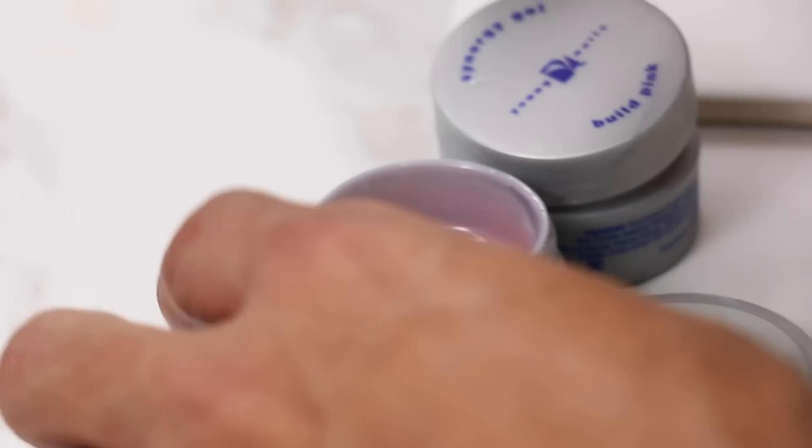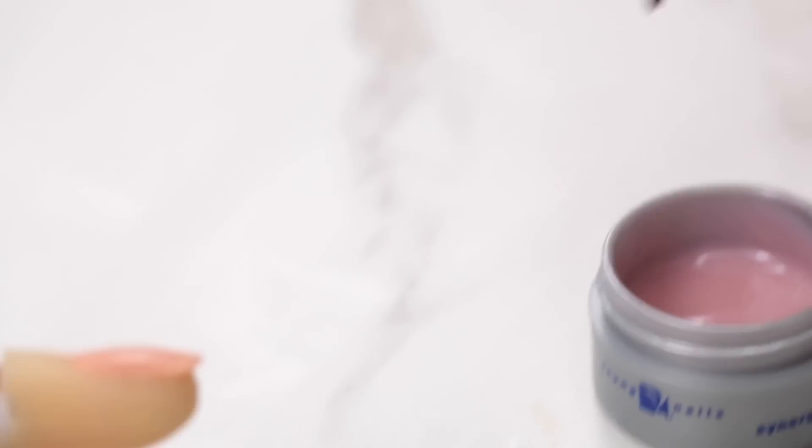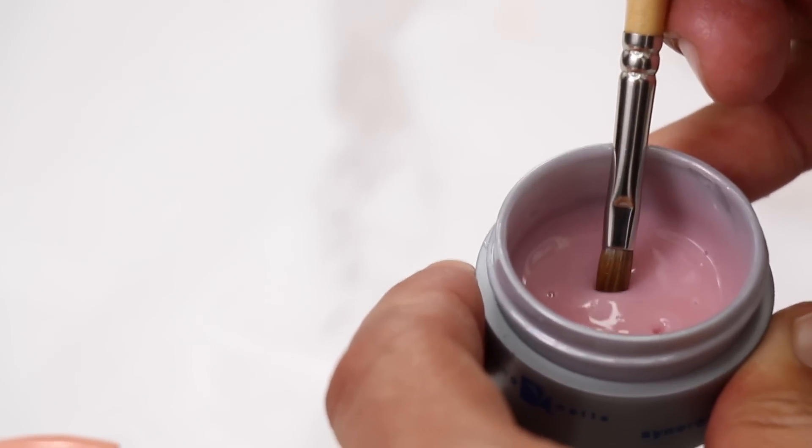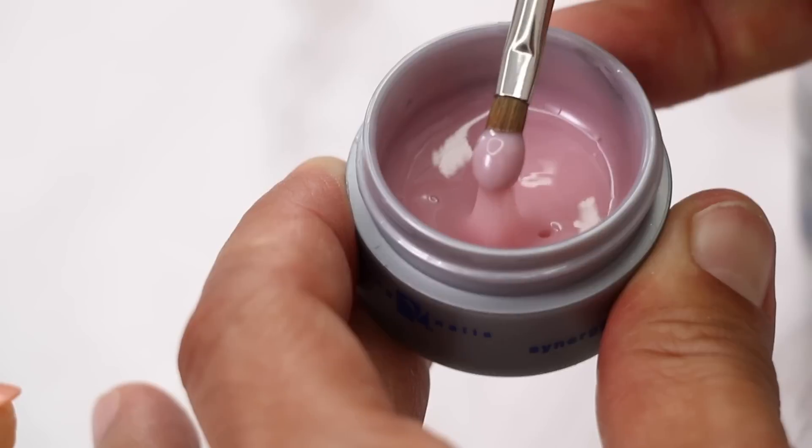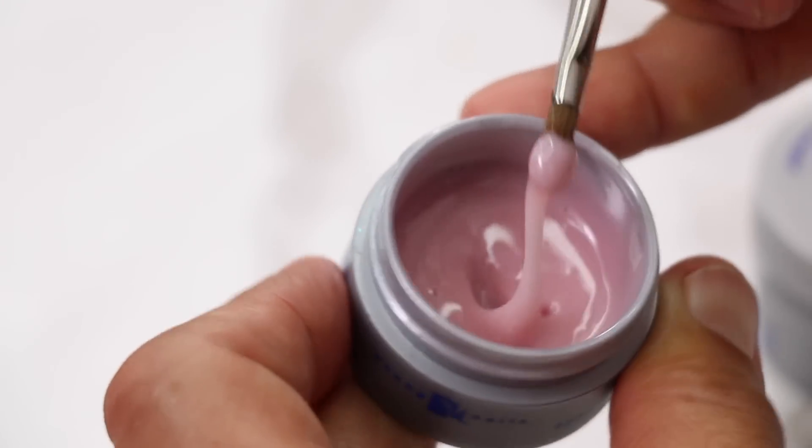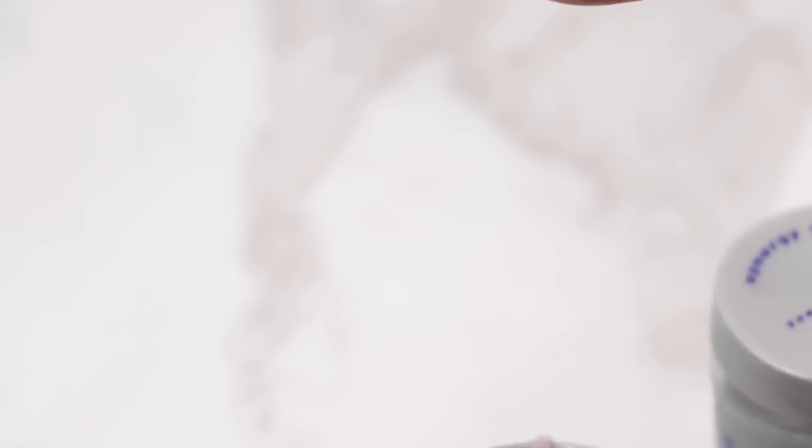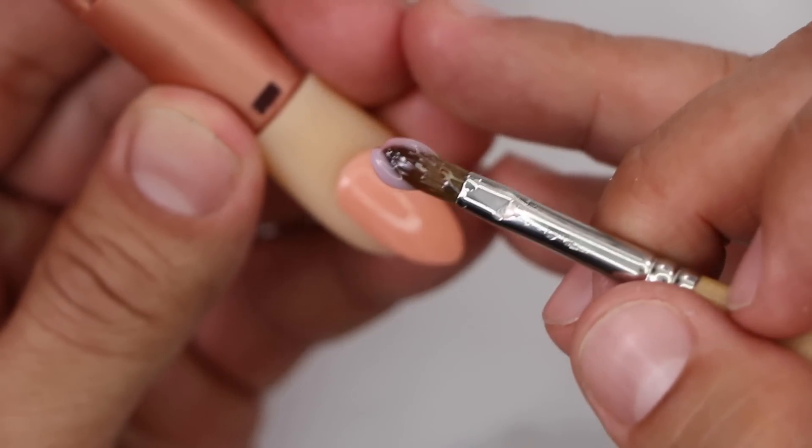When you work with a thicker gel, I'm not going to be able to just pull. I actually have to take the tip of the brush and I have to kind of scoop it out. You see I'm scooping it? See I'm scooping it? I'm going to have that same tail. Tap it off the side.